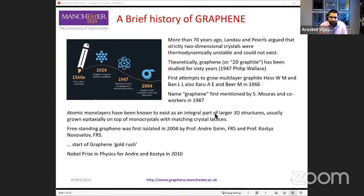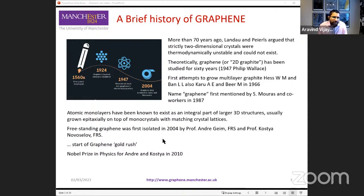However, there have been lots of efforts to make graphene. People made graphene grown on top of other materials. The name graphene was first coined in 1987. But the first true two-dimensional graphene material was produced and studied in 2004 by Andrei Geim and Kostya Novoselov from the University of Manchester, and this was really the start of the graphene revolution. For their discovery of graphene and studying its properties, Andrei and Kostya were awarded the Nobel Prize in Physics in 2010.